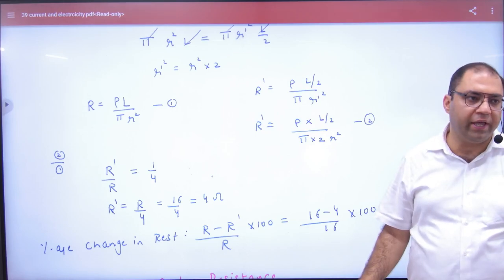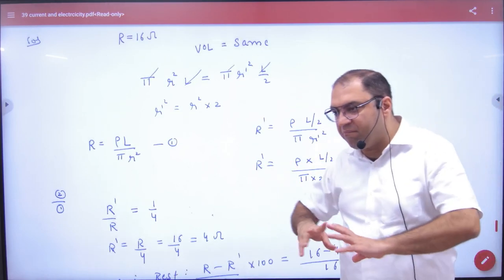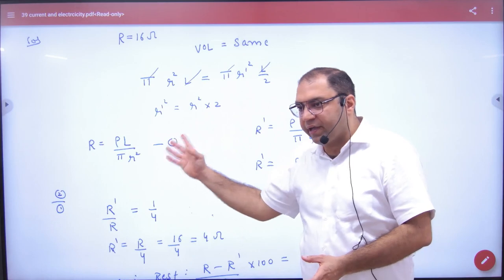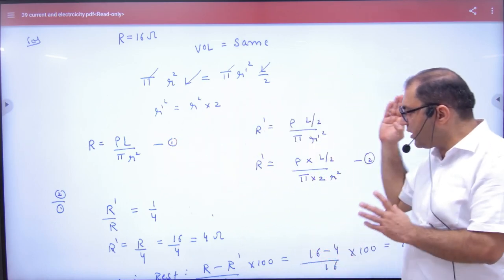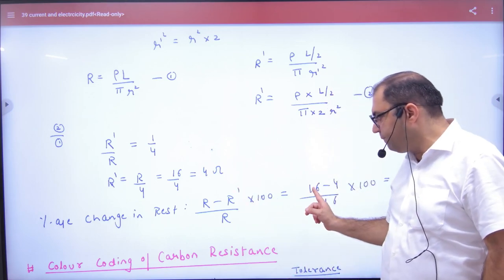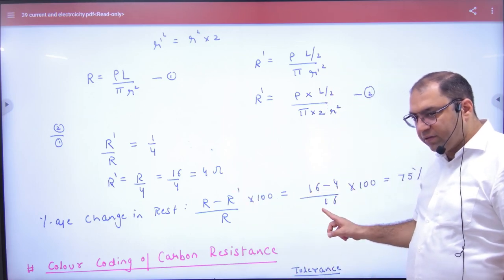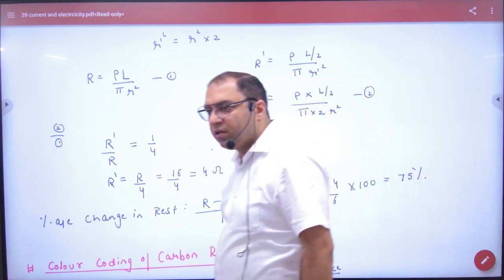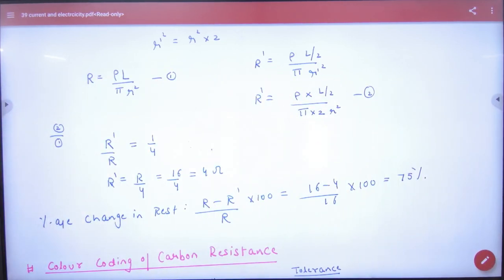There is no shortcut for this. In this question with melting, you have to equate volume, calculate radius, apply two resistance formulas, divide, and get the answer. First resistance was 16, then it became 4. Change is 12 by 16 into 100 percentage, change in resistance can be calculated.